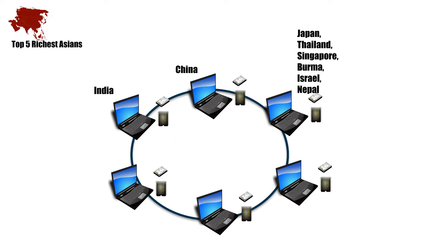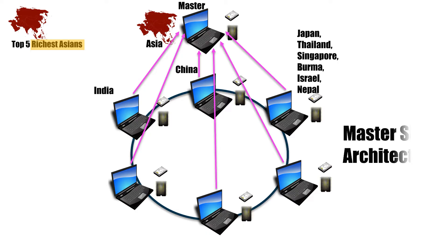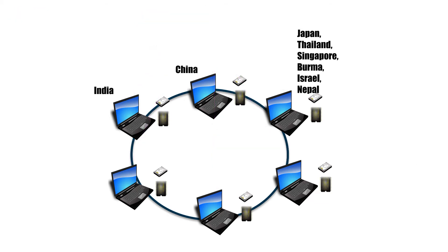But here we have a problem: each machine is working on its respective country's data, so who is going to tell us who the top five richest Asians are? This is exactly where the master helps. A master is a machine that takes the processed data from each of these machines at the country level and calculates the top five richest people at the Asia continent level. This is called master-slave architecture, where we have a master and worker machines doing the distributed data processing.